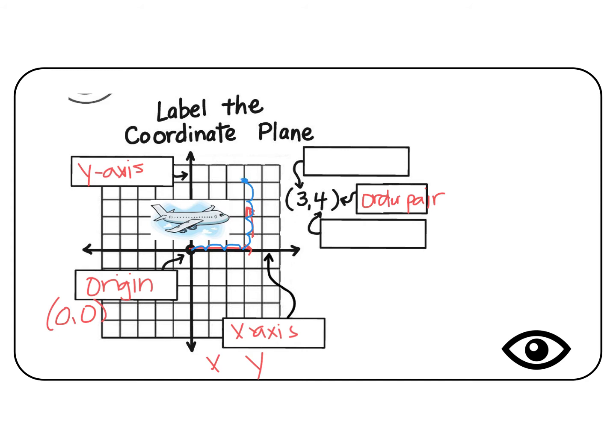The 3 tells us how far we're going to go down the x-axis, so we call it the x-coordinate. And the 4 tells us whether we're going to go up or potentially down on the y-coordinate.